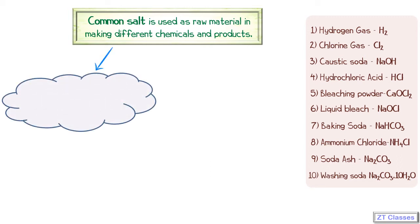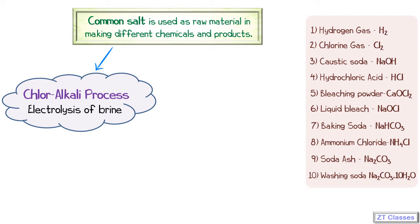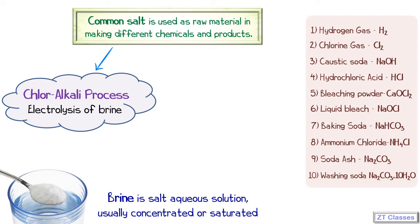The first reaction is the chloralkali process. Here, 'chlor' stands for chlorine and 'alkali' stands for NaOH. The chloralkali process in simple terms is nothing but electrolysis of brine. Brine is an aqueous solution with a lot of salt in it — it is salt water, which is NaCl plus H₂O. When you perform electrolysis, the products you get are NaOH (caustic soda), chlorine gas, and hydrogen gas.